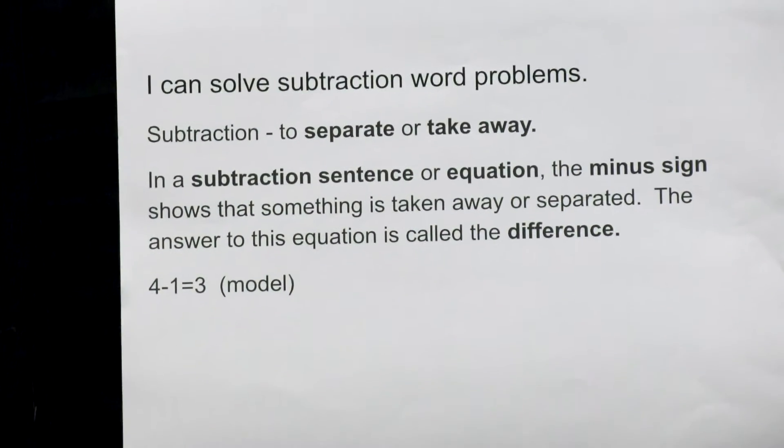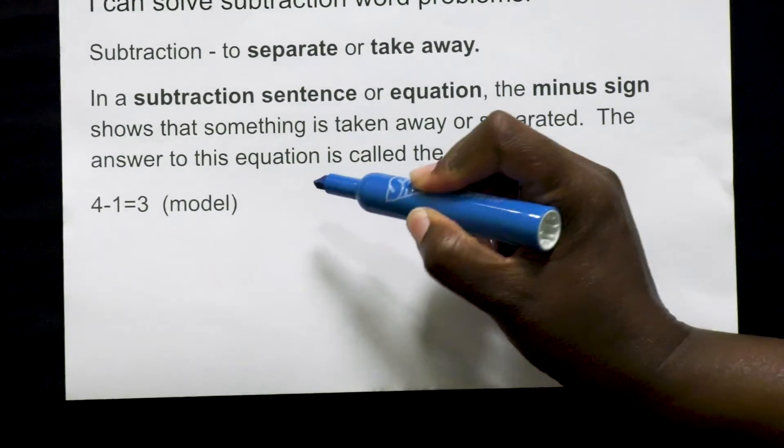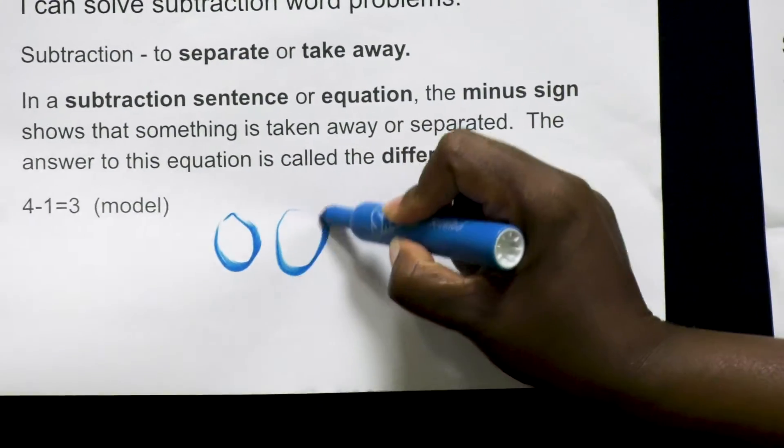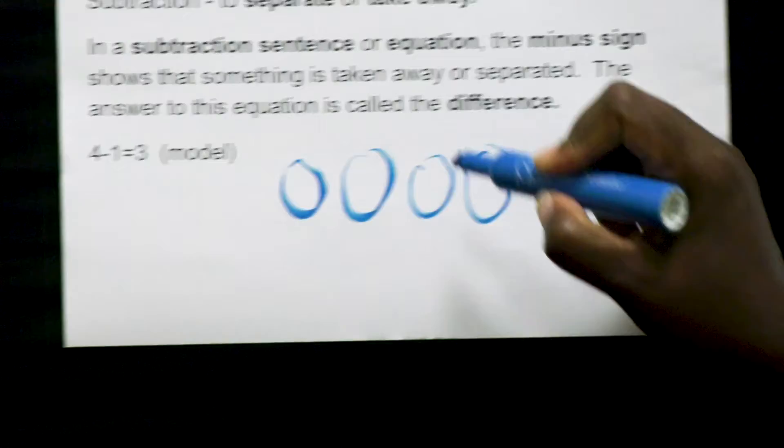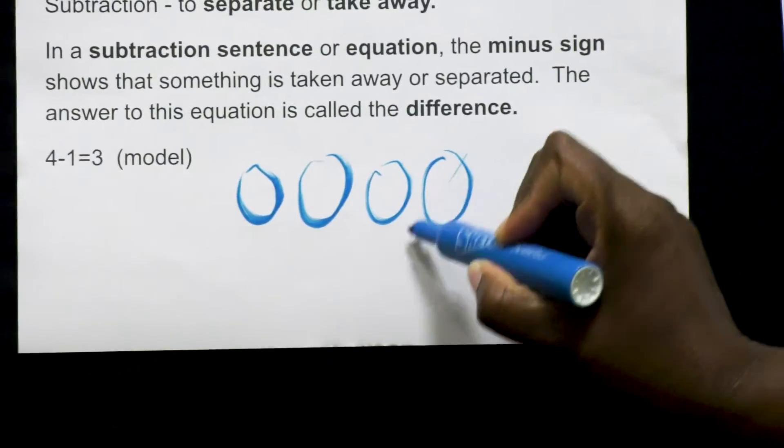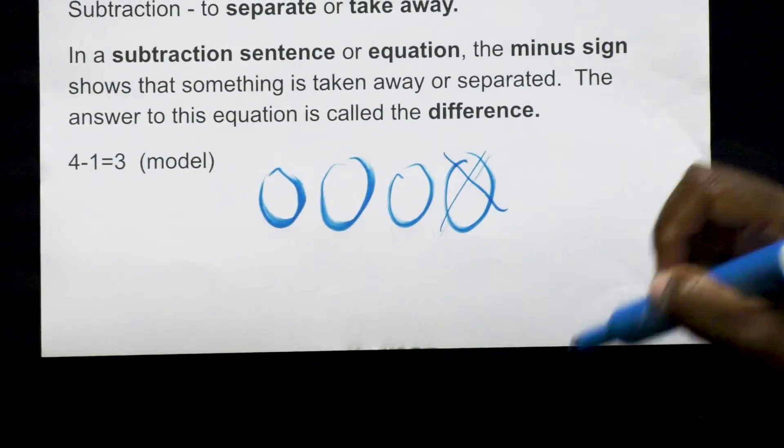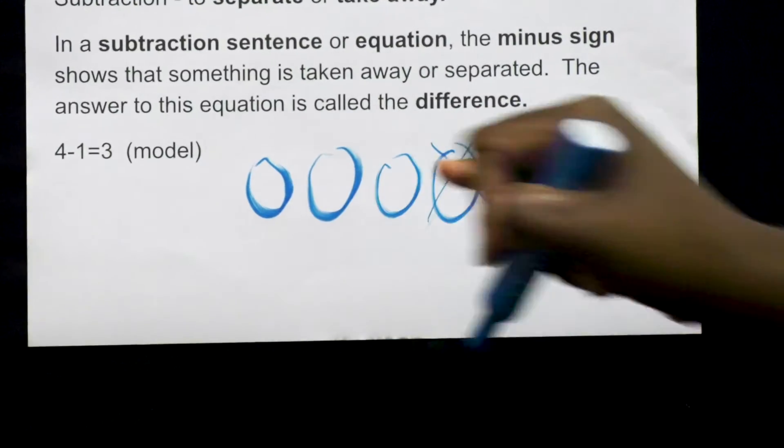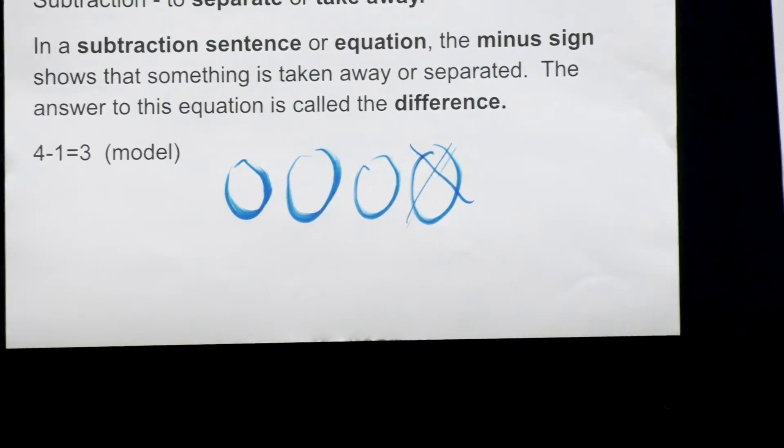And I'm going to model that for you. If you have four circles and it says minus, so you would cross out one and you have one, two, and three left.